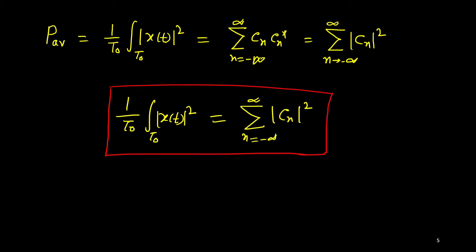The left-hand side gives the average power, and the right-hand side gives the power of individual components — |c0|², |c±1|², |c±2|², and so on. These are the individual powers of those exponential form components.